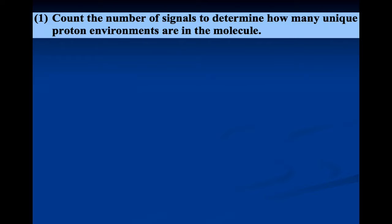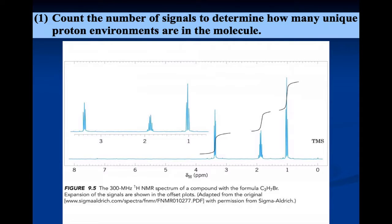When you start trying to solve NMR problems, just follow these rules. First, count the number of signals to determine how many unique proton environments are in the molecule. On a multiple-choice exam, you can eliminate answers based on that information alone — if I give you a spectrum with three signals and you calculate a molecule should give four or five, you know it can't be that molecule. So if we look at this spectrum, I have three signals — one, two, three. Always ignore zero; that's the TMS standard.